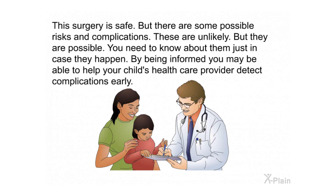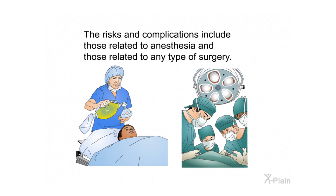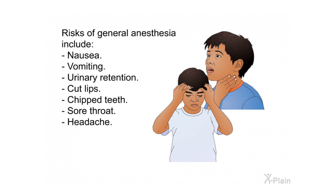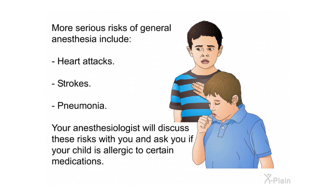Risks and complications. This surgery is safe, but there are some possible risks and complications. These are unlikely but possible — by being informed, you may be able to help your child's health care provider detect complications early. Risks and complications include those related to anesthesia and those related to any type of surgery. Risks of general anesthesia include nausea, vomiting, urinary retention, cut lips, chipped teeth, sore throat, and headache. More serious risks include heart attacks, strokes, and pneumonia. Your anesthesiologist will discuss these risks and ask if your child is allergic to certain medications.